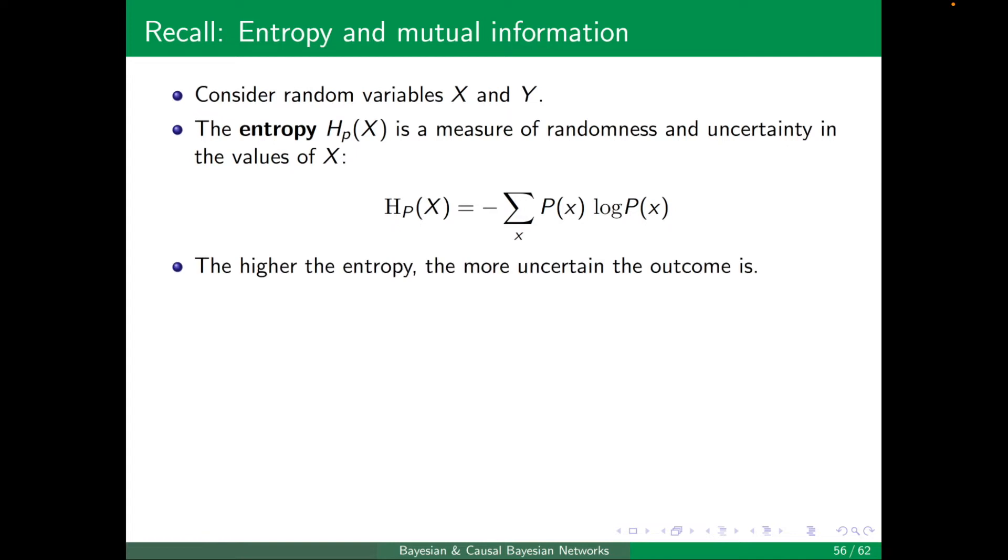For example, a uniform distribution means that every value of x is possible with the same probability, so we have no clue which one can happen. This has a high entropy.